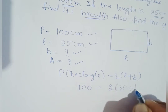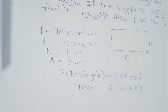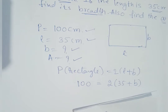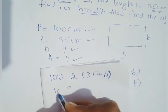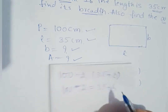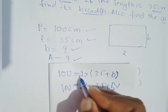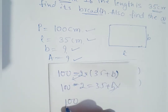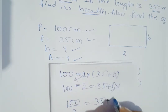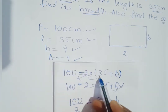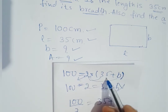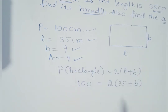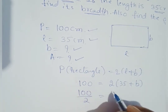Let me show you a common mistake students often make. With the expression 2 into (35 + b), some students incorrectly write: 100 minus 2 equals 35 plus b. That is wrong. Since 2 is multiplied, when it crosses to the other side it becomes division. So the correct step is: 100 upon 2 equals 35 plus b.